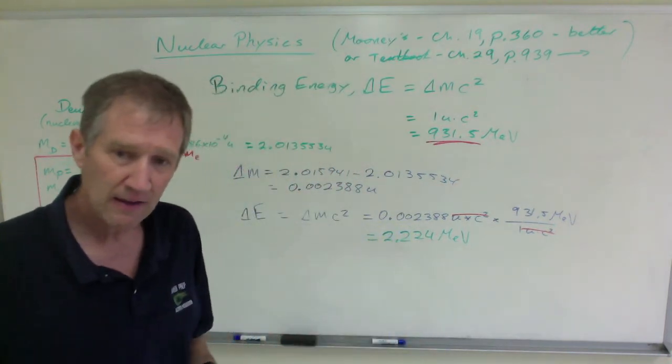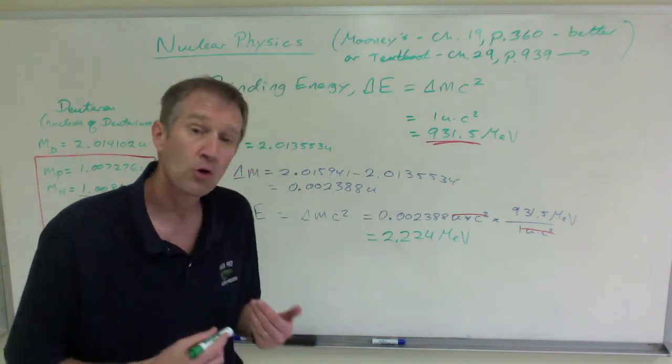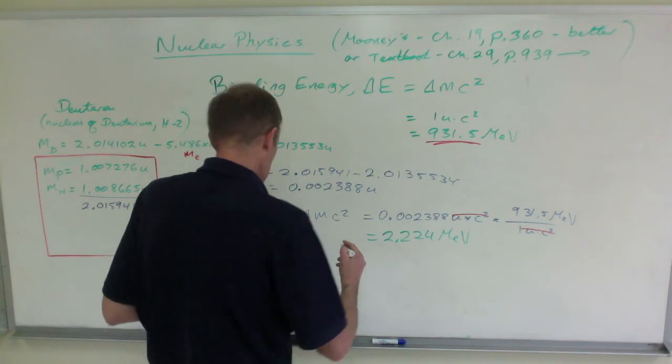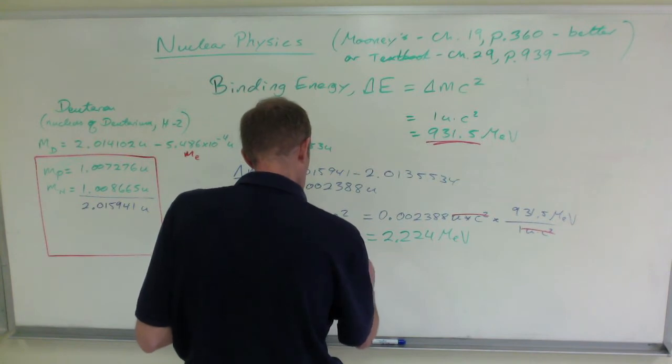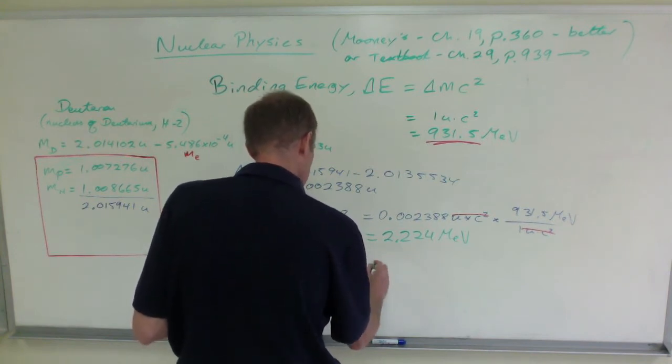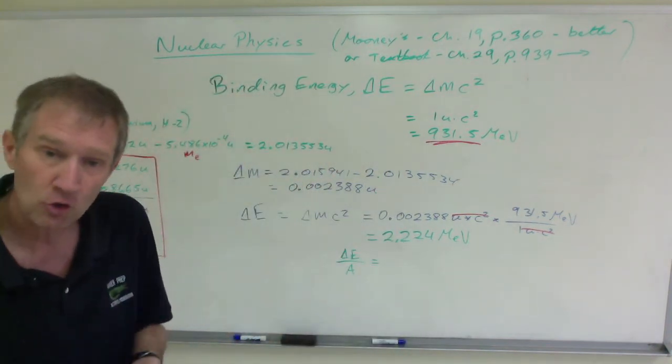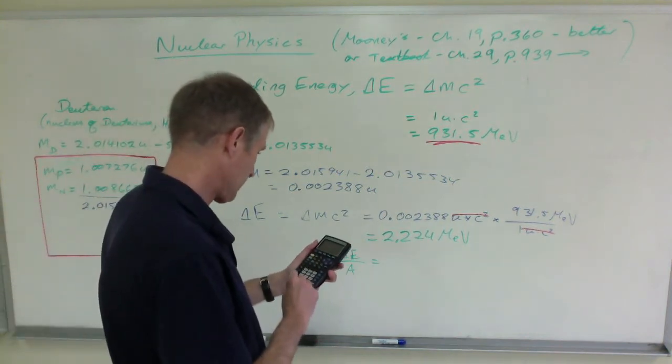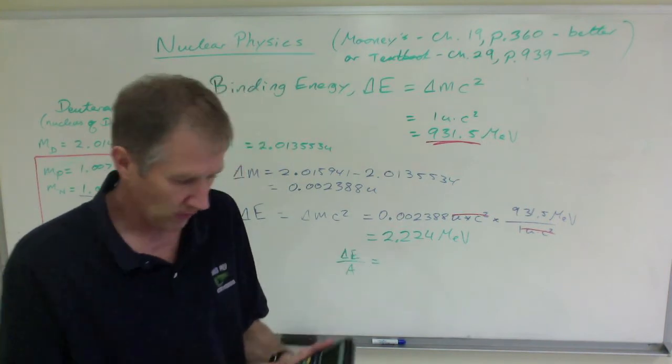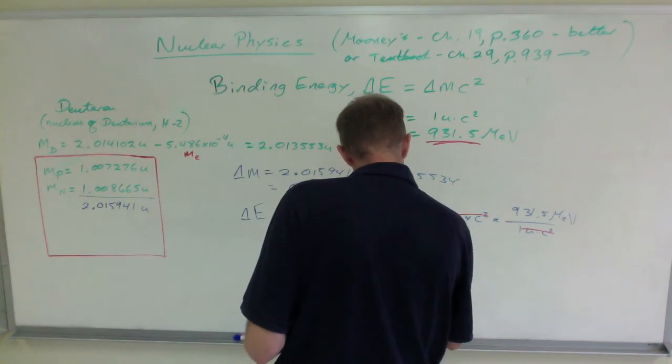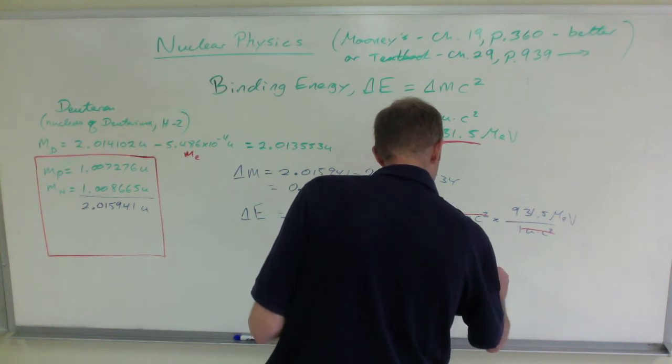You'll see that often they will ask that you express this in mega electron volts per nucleon. If you put that in mega electron volts per nucleon, you divide by the mass number. So that would be that number divided by a mass number of 2 because you have two nucleons. So if I take that number, 2.224 divided by 2, I get 1.112 mega electron volts per nucleon.